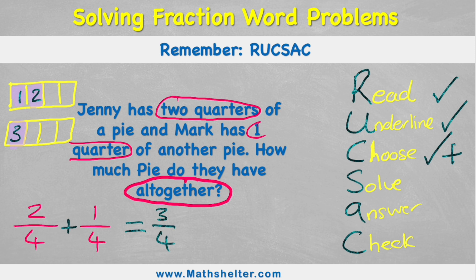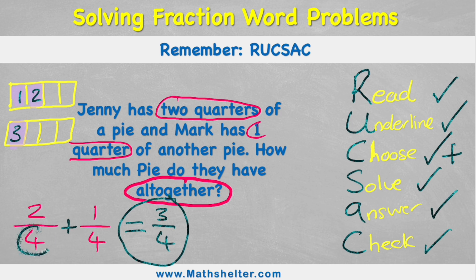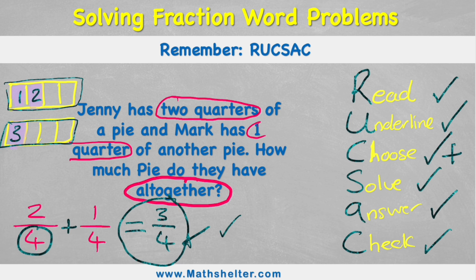I've solved it and got my answer. I'm working in quarters — is my denominator in quarters? Yes. Two quarters add one quarter equals three quarters. I split my bar model into quarters, got two and one, which gave me three quarters. Look how helpful RUCKSACK was!